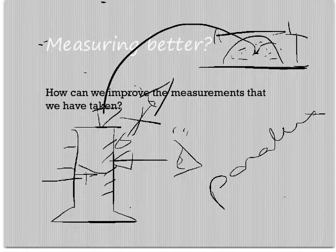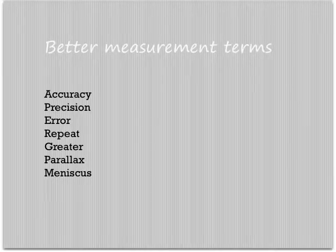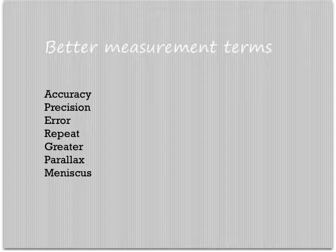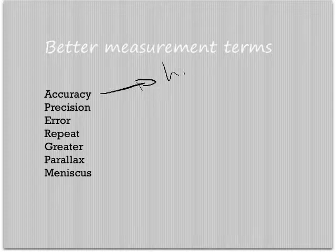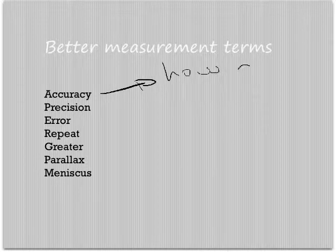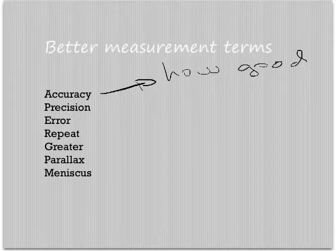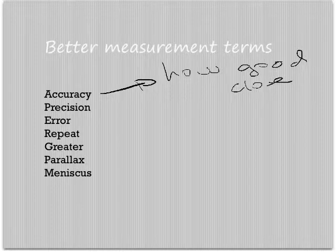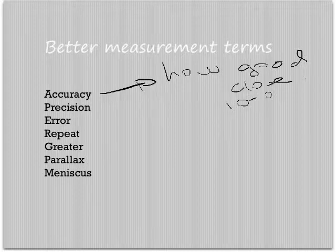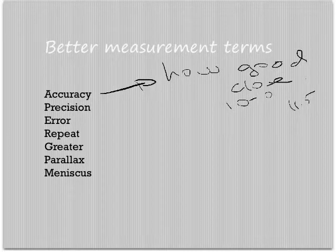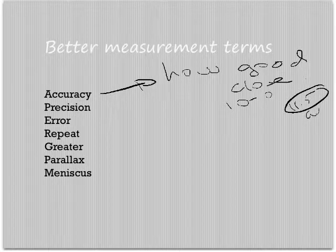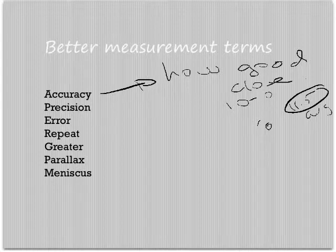Some better terms here. So accuracy is how good your measurement is, in other words how close it is to the actual value. If you have an actual value of about 10.0 but you get something around about 11.5 on average, then it's not very accurate. However, if you get something about 10.1, then you can say you are quite accurate.